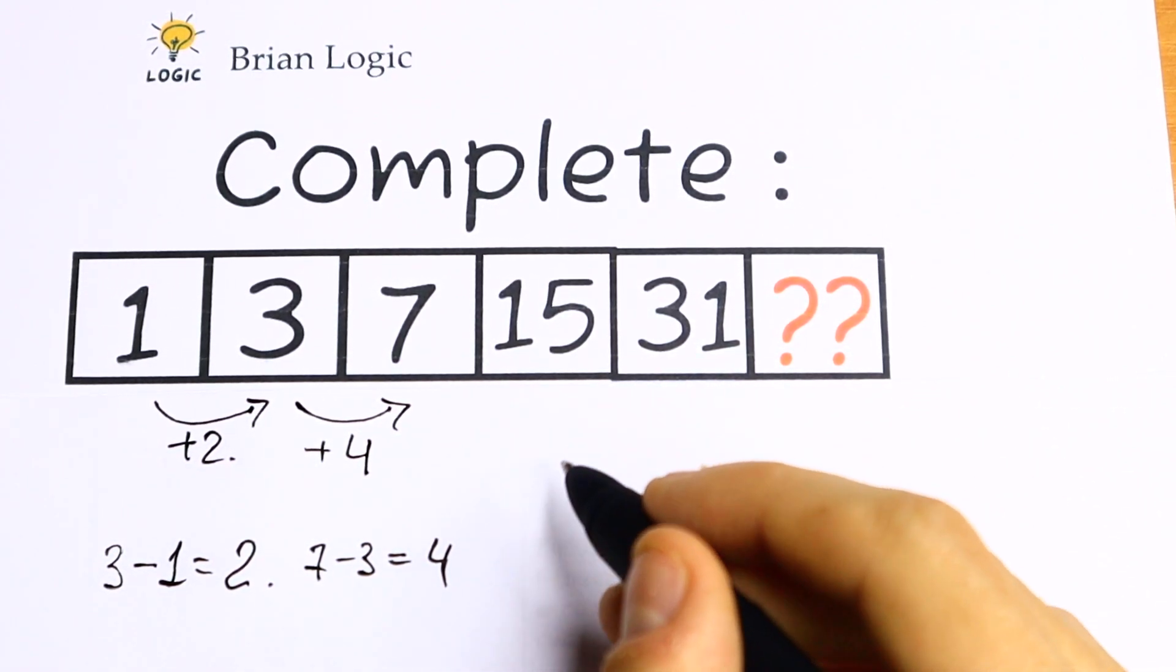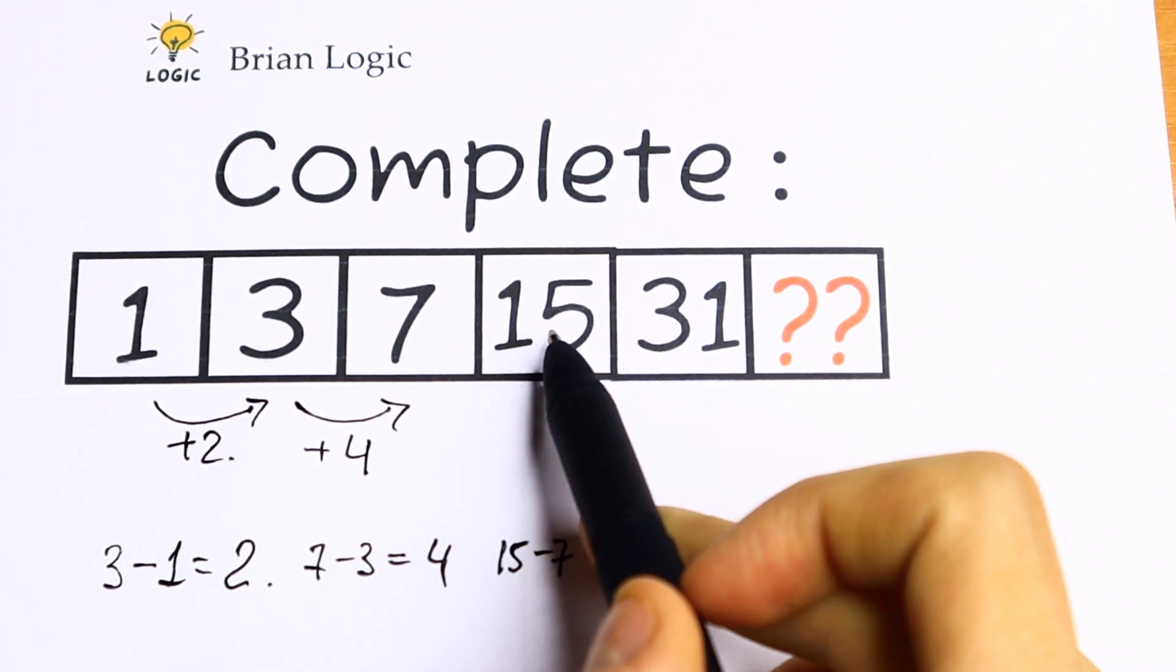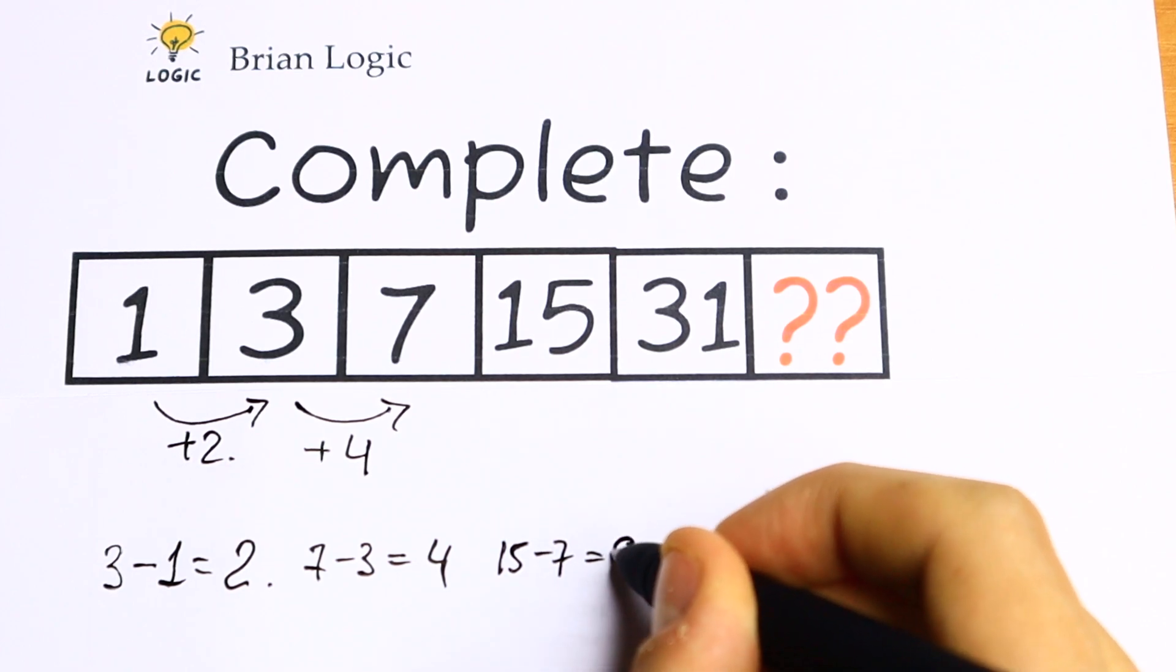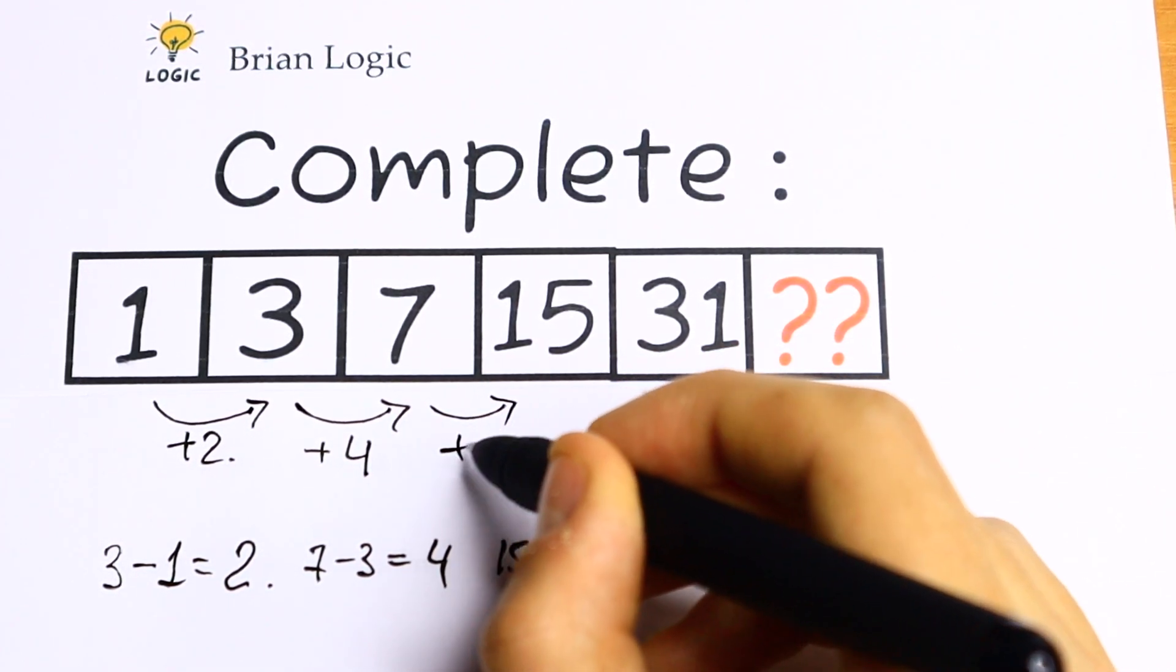Let's use the same logic. If we subtract 7 from 15, we get 8. So we need to add 8 to 7 to get 15.